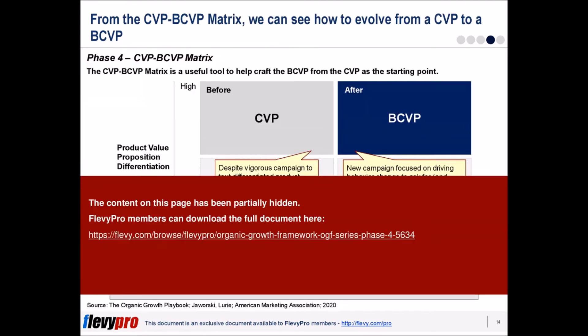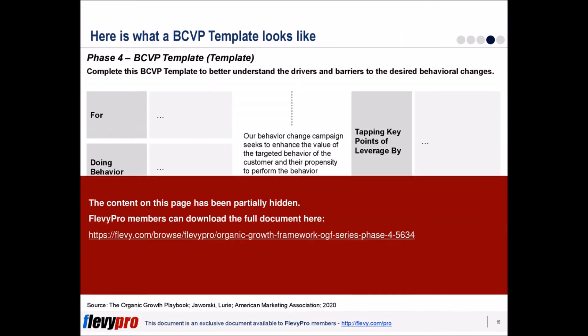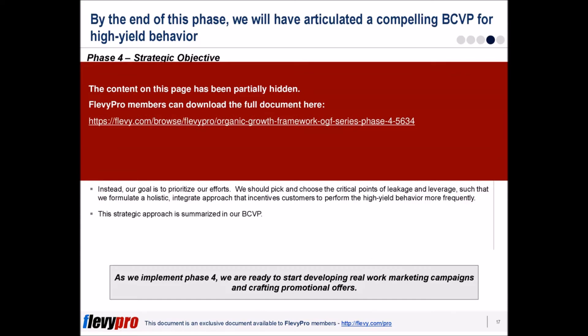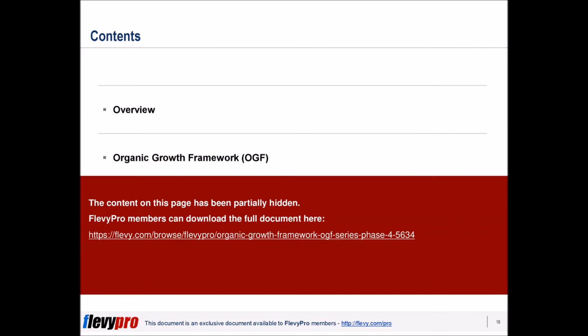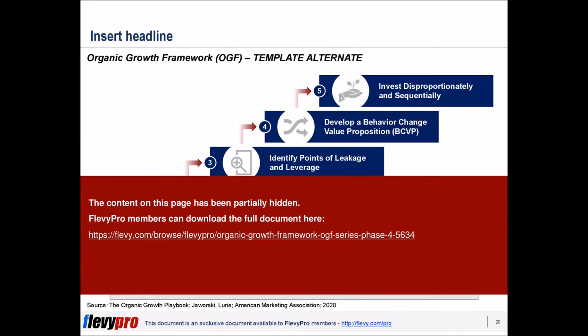The Organic Growth Framework follows a five-phase process: 1. Map the Customer Decision Journey Waterfall. 2. Use Propensity-Based Segmentation. 3. Identify Points of Leakage and Leverage. 4. Develop a Behavior Change Value Proposition, BCVP. 5. Invest Disproportionately and Sequentially.